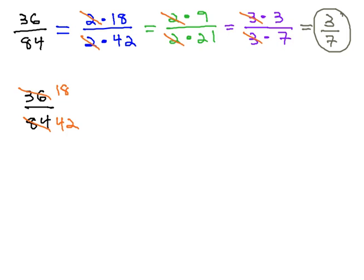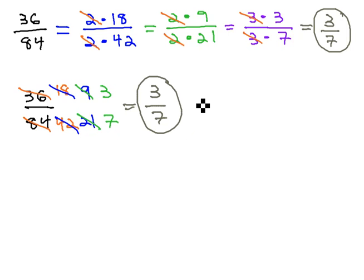Then I'll look at those and say I can divide both of those by another 2. 18 divided by 2 is 9, and 42 divided by 2 is 21. Then I might look at those and say I can divide those by 3. 9 divided by 3 is 3, 21 divided by 3 is 7. And in that same way, a little more compact, we end up with the 3 sevenths.